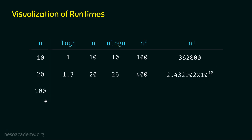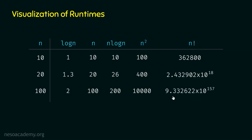Now let's say N is 100. Then log 100 (base 10) is 2, N is 100, N log N is 2 × 100 = 200, N² is 100² = 10,000, and N! is 9.332622 × 10¹⁵⁷ — which is very, very large. We can observe the number of operations for different input sizes.